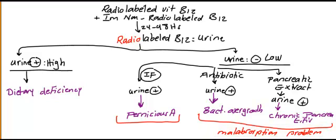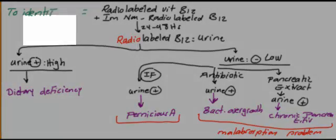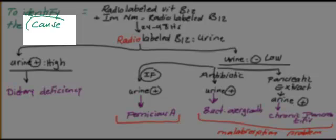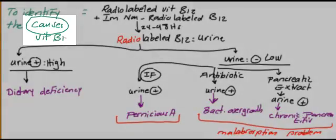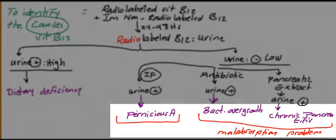So now if I'm going to ask you, why do you do the Schilling test? You can tell me to identify the cause. So Schilling test is used to identify the causes of vitamin B12 deficiency. And according to Schilling test, you have either dietary deficiency, or pernicious anemia which is non-malabsorption, or malabsorption causes like bacterial overgrowth or chronic pancreatitis.